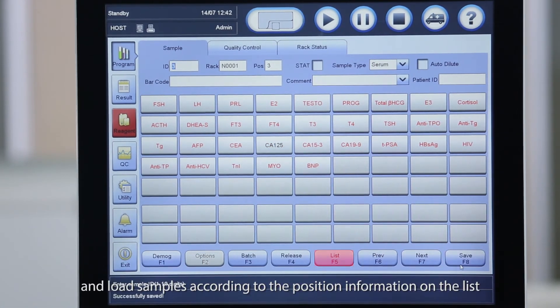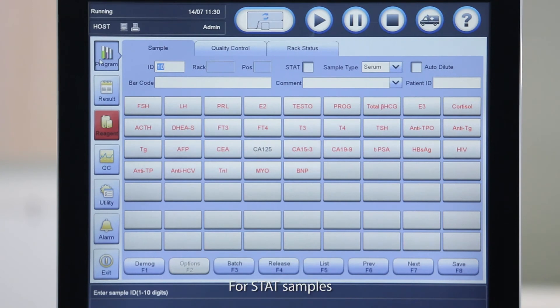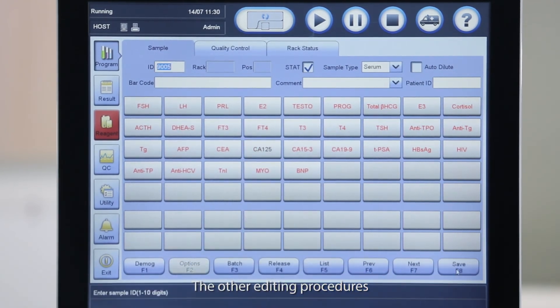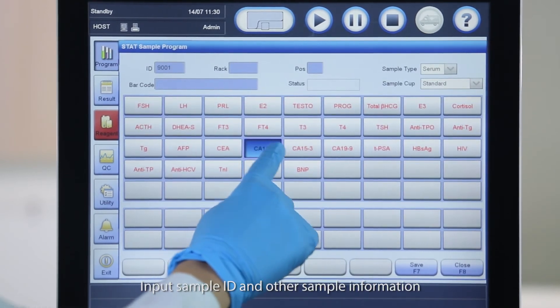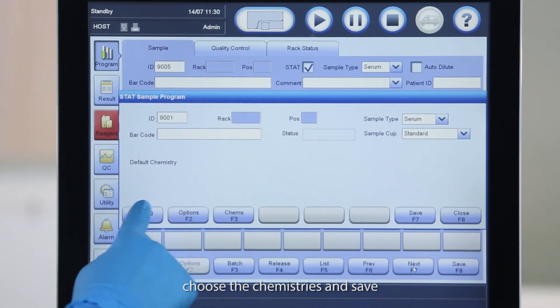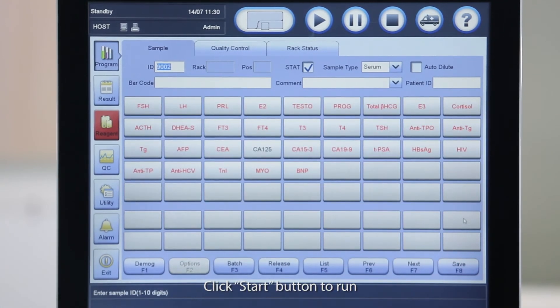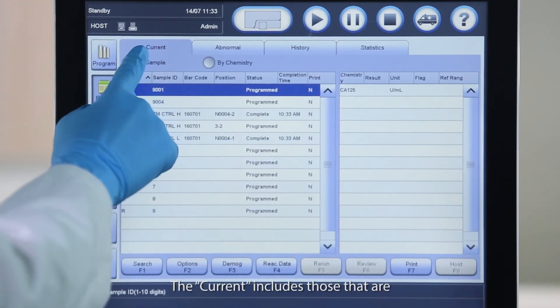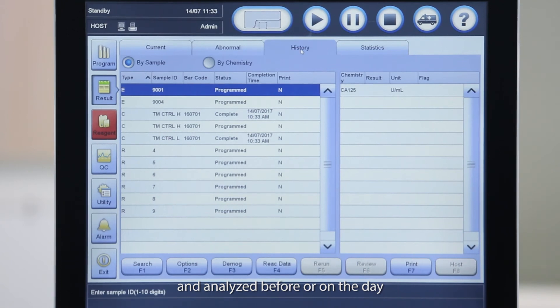Click List and load samples according to the position information on the list. Click Start button to run. For stat samples, just mark the stat checkbox before selecting Chemistries. The other editing procedures are the same as running routine samples. Or you can click the Ambulance button to edit stat samples. Input sample ID and other sample information. Choose the chemistries and save. Load samples and place the Rack in stat lane. Click Start button to run. You can view the results in current or history. The current includes those that are programmed and analyzed on the day. The history results are those programmed and analyzed before or on the day.